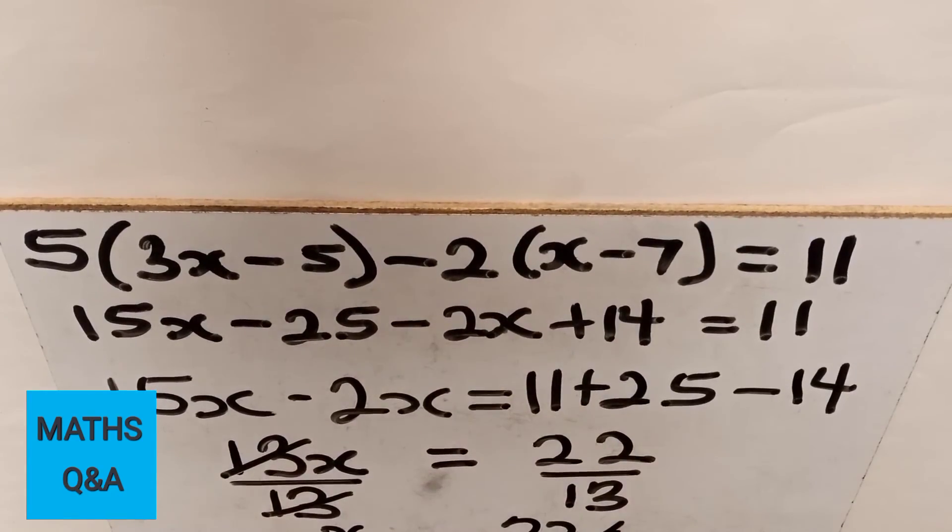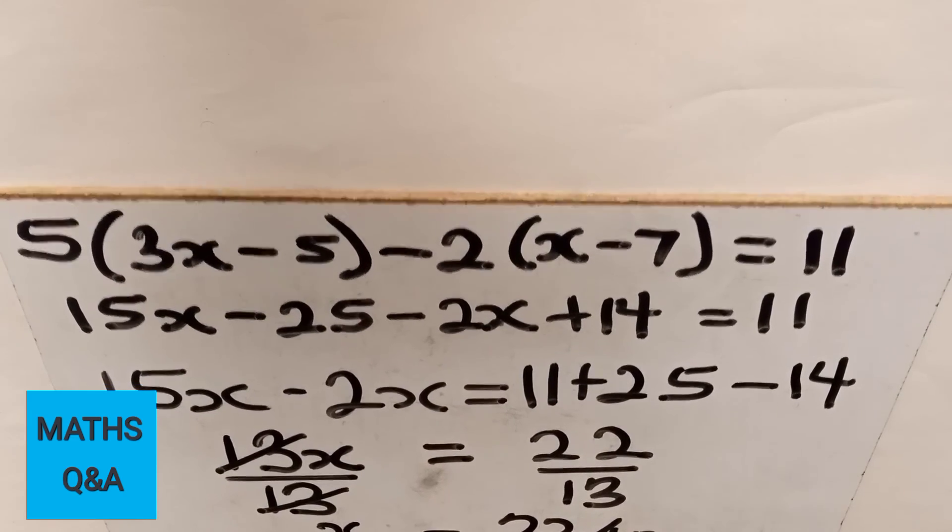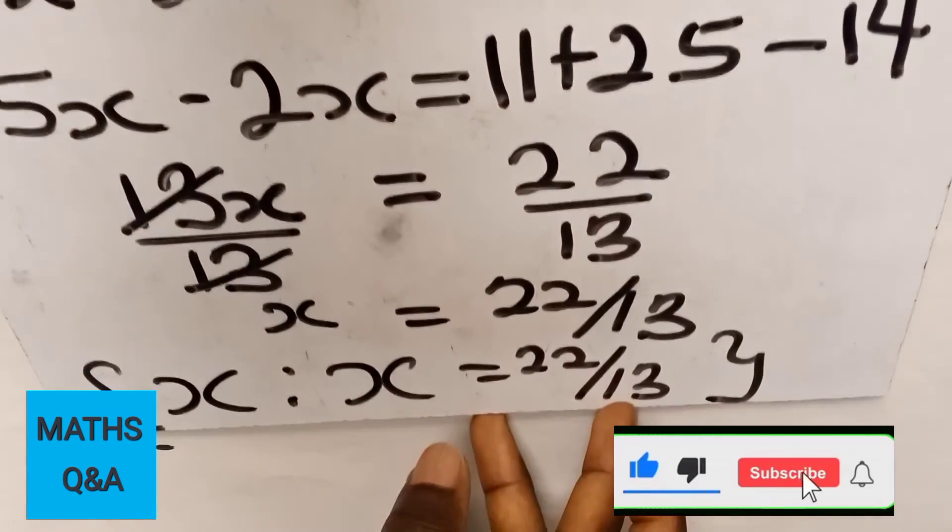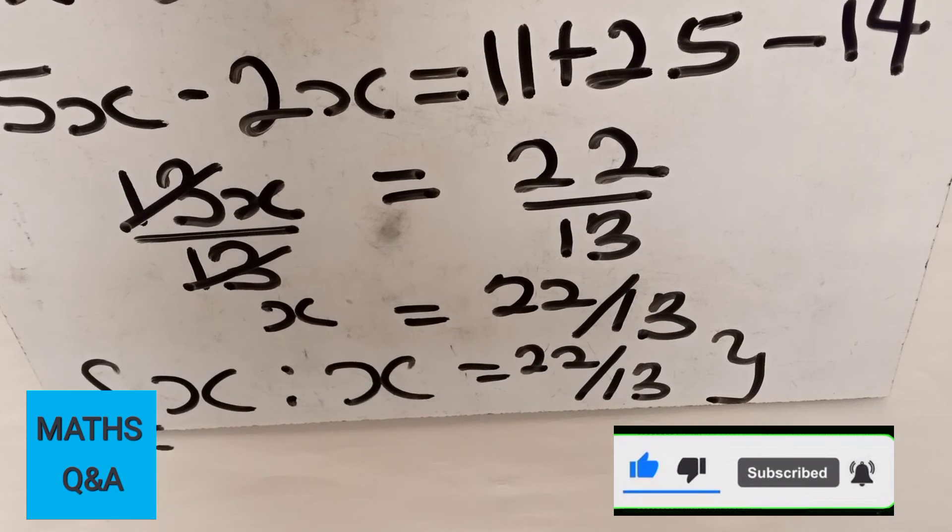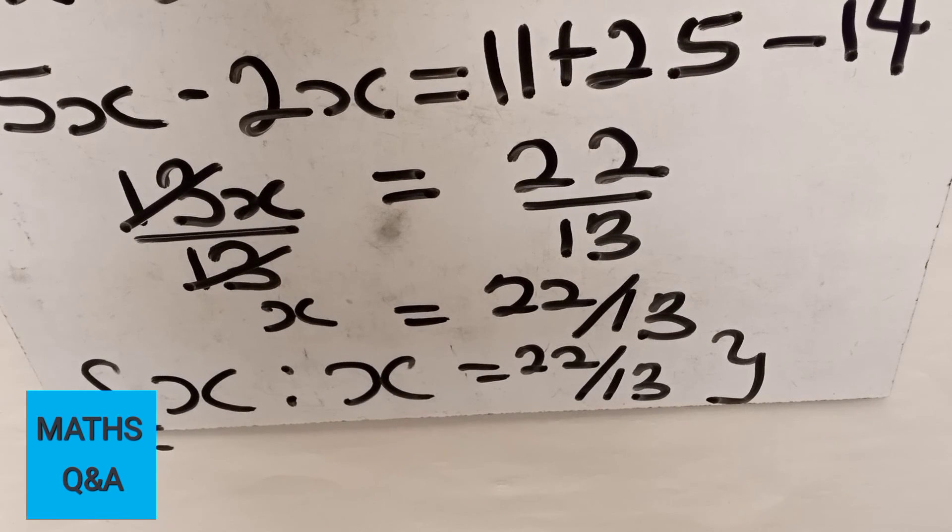5(3x-5)-2(x-7)=11. Our final answer is the truth set {x: x = 22/13}.